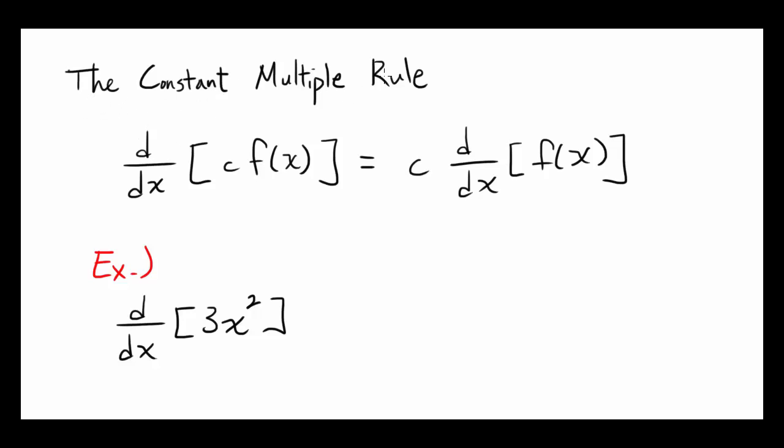The constant multiple rule states that the derivative with respect to x of c, which is a constant, times f(x), is the same thing as c times the derivative of the function.